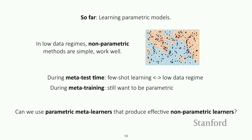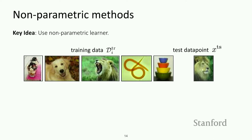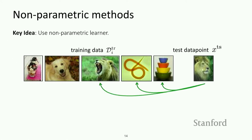During meta-training we still want to be parametric, because we want to be able to scale to large datasets. The key idea of these approaches is: can we use parametric meta-learners to produce effective non-parametric learners? One natural approach for few-shot learning is to take a test data point and compare it to all the training data points, find the one that looks most similar, and return the label corresponding to that one.